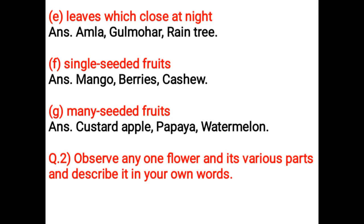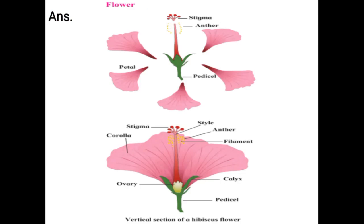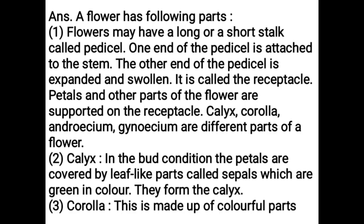Observe any one flower and its various parts and describe it in your own words. A flower has following parts. Flowers may have a long or short stalk called a pedicel. One end of the pedicel is attached to the stem. The other end of the pedicel is expanded and swollen — it is called the receptacle. Petals and other parts of the flower are supported on the receptacle.